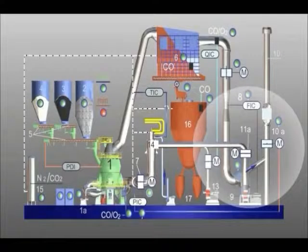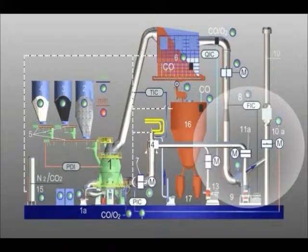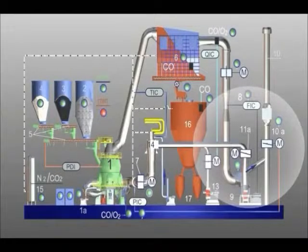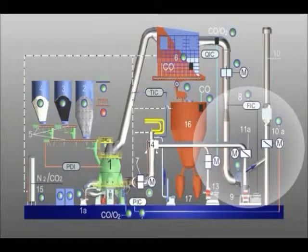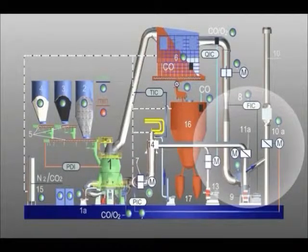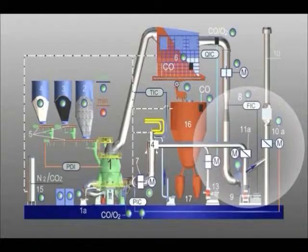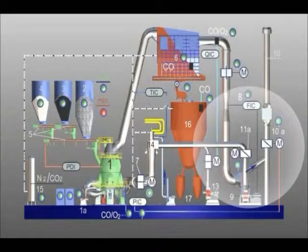The flap in the return gas duct at position 11a and the stack flap at position 10a for controlling the volume flow of exhaust gas are moved to their start position. The volume flow of process gas is measured via a venturi tube at position eight. This volume flow is regulated by means of the vane control at position nine.